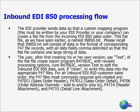For an inbound 850 customer sales order, the F47 files most commonly required and created are F47.11 — the header — F47.12 — the detail — F47.6 — the address override for sold to and shipped to — F47.14 — the header attachment — and F47.15 — the detail line attachment.